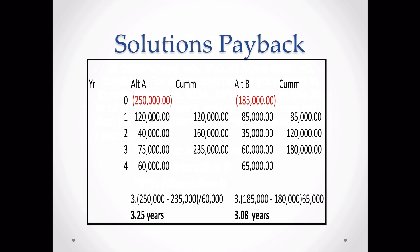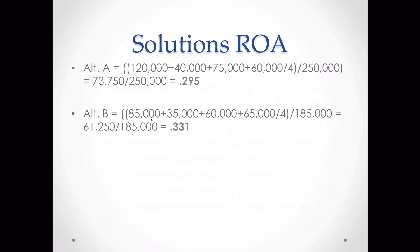For Alternative B, we do the same thing. The cumulative column gives us $85,000, then $120,000, then $180,000 after year three. The initial investment is $185,000, so $5,000 remains ($185,000 minus $180,000), divided by the year four cash flow of $65,000, giving us 3.08 years. Based on payback we choose Alternative B because 3.08 years is less than 3.25 years — we pay back the investment sooner.